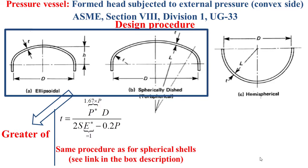We also have a thickness that can be obtained using the same procedure as for spherical shells, which I explained in a previous video — you can see the link in the description box. We will take the greater of the two thicknesses obtained by the two procedures. Pay attention here about the maximum allowable external pressure Pa, which should be obtained as the smaller of the two pressures obtained by reversing procedures 1 and 2.